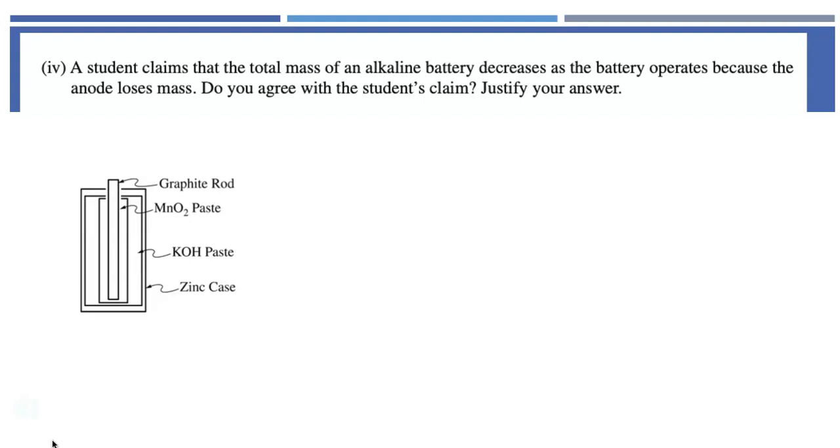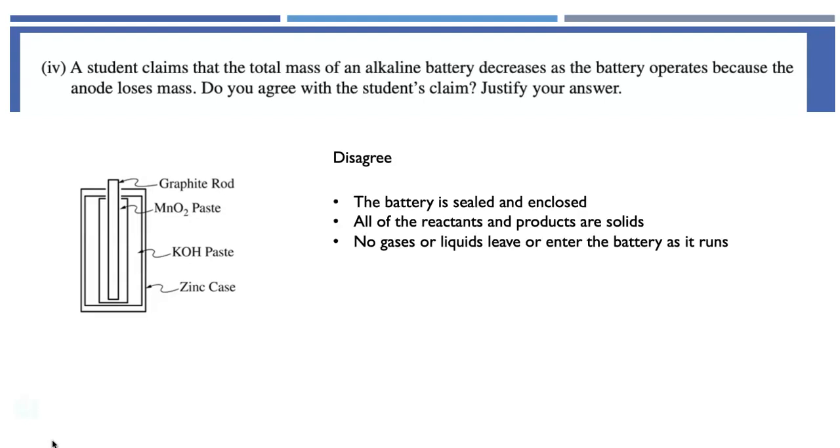A student claims that the total mass of an alkaline battery decreases as the battery operates because the anode loses mass. Do you agree with the student's claim? Justify your answer. And I decided that this was a good place to bring back the diagram of the alkaline battery. Notice how it's all encased. I disagree with the student's claim. Why? Well, the battery is sealed and enclosed. All the reactants and products are solids. Nothing's getting in. Nothing's getting out. There's no reason why the mass would change. We should see conservation of mass as this runs. Yes, anodes do become less massive as batteries run. This is a closed system and that was worth one point.